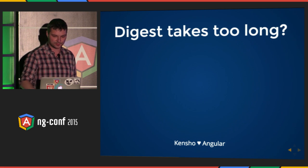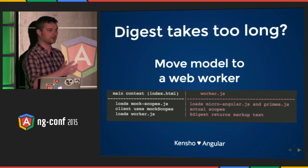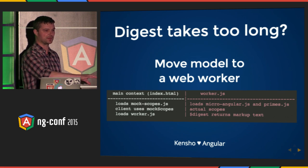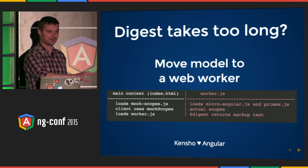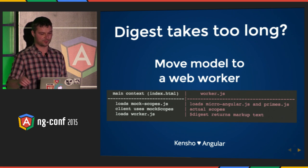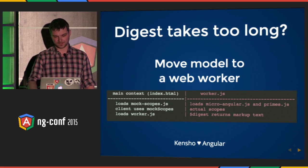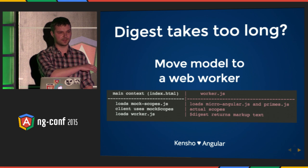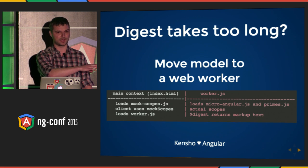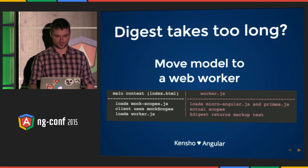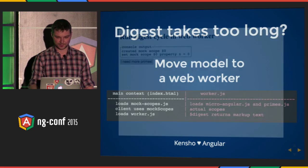So, digest taking too long — here's the idea. Why don't we move the digest cycle and model into a separate thread from the browser? So the browser will still be responsive while the primes are computed. That's what I've done — I moved my micro Angular and the primes.js into a WebWorker. And on the client side, I left the same API: mock scopes.